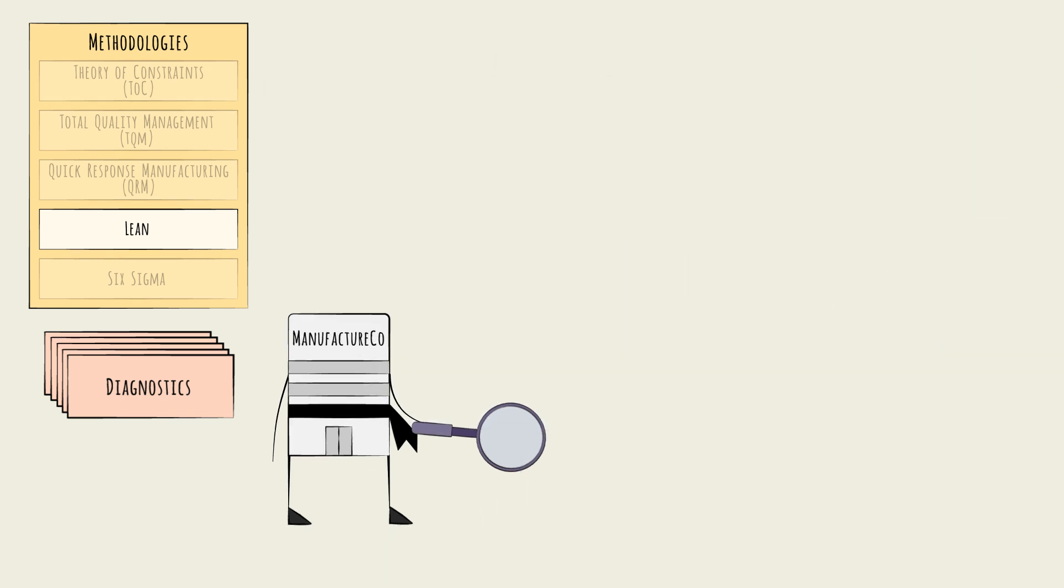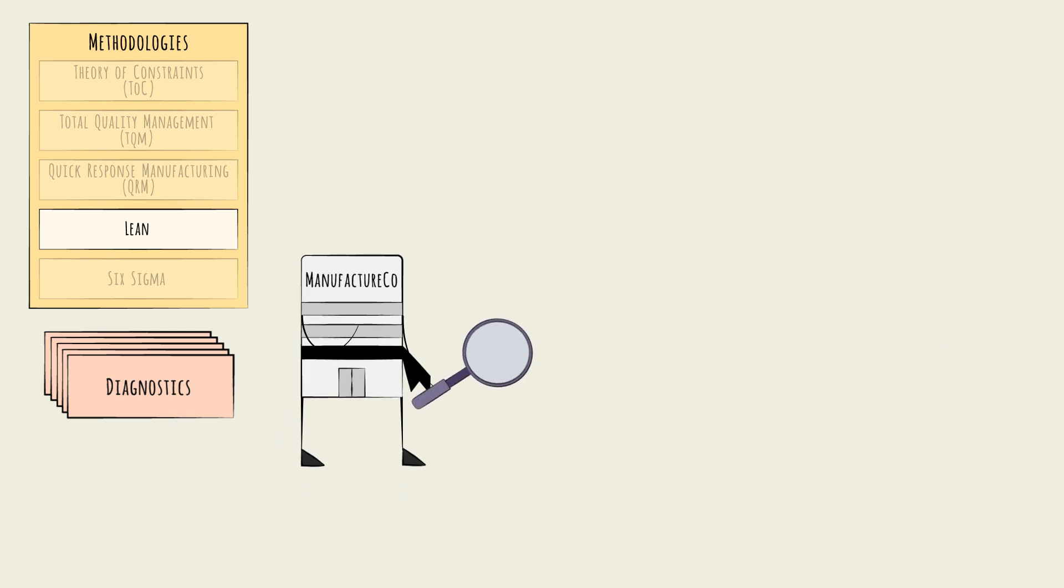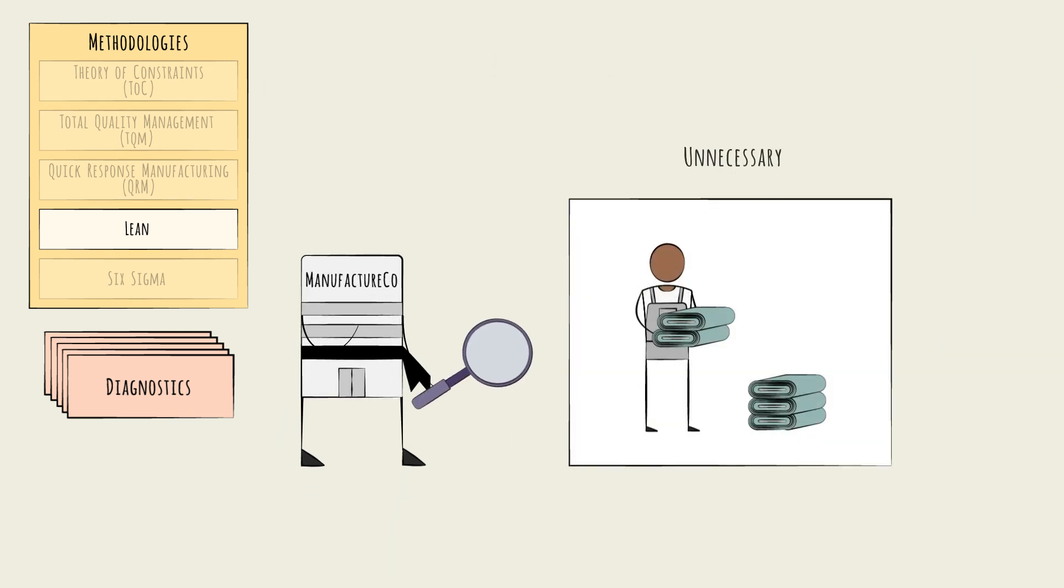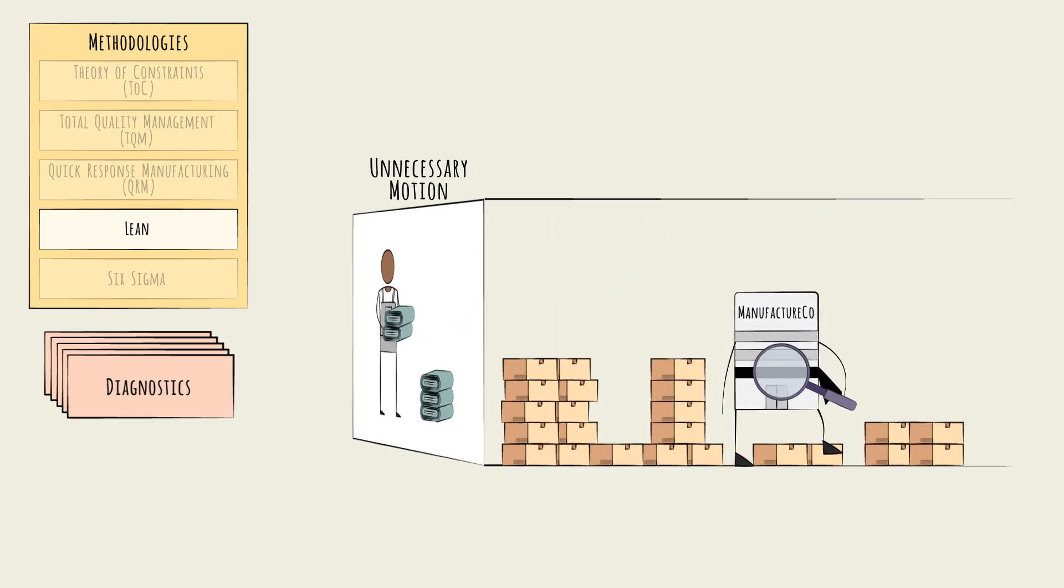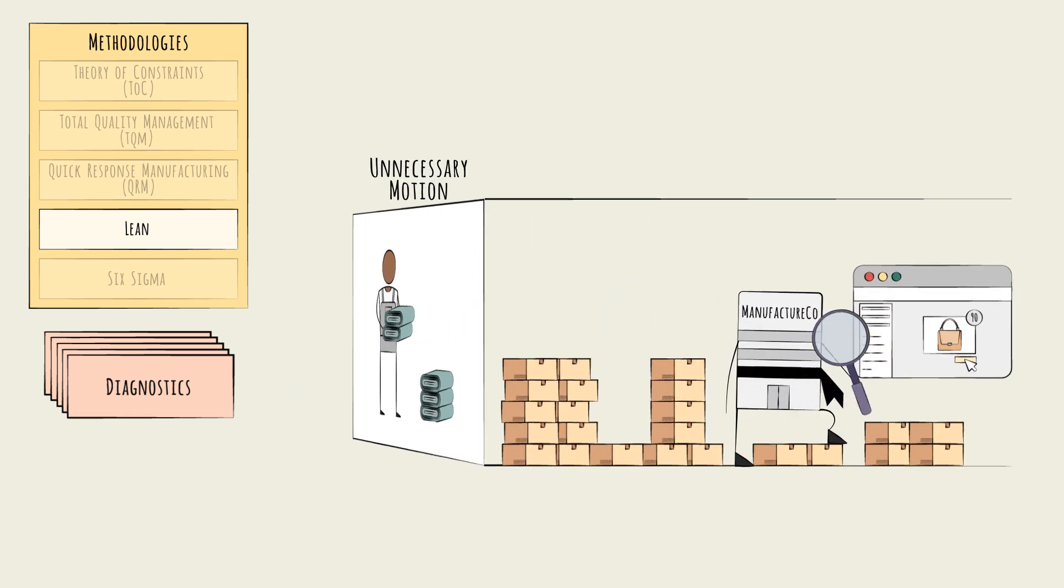Getting to the root causes can require multiple layers of observation. For example, the cause of the unnecessary motion waste could be excessive inventory cluttering the floor. The root problem, in this case, would be traced back to over-ordering.